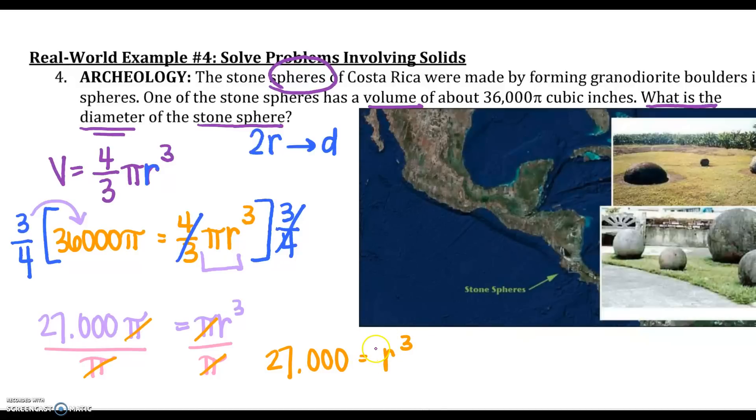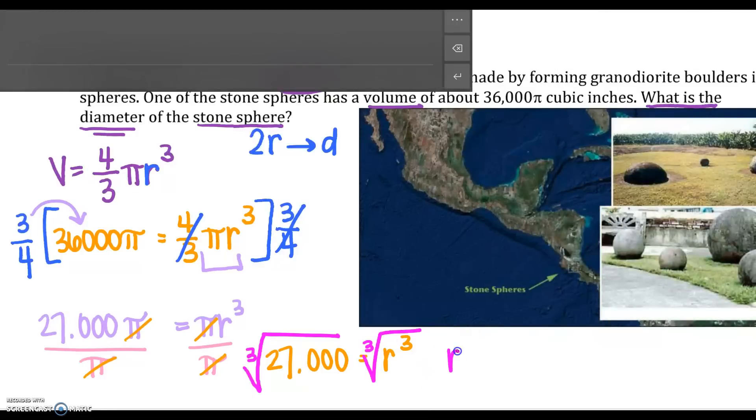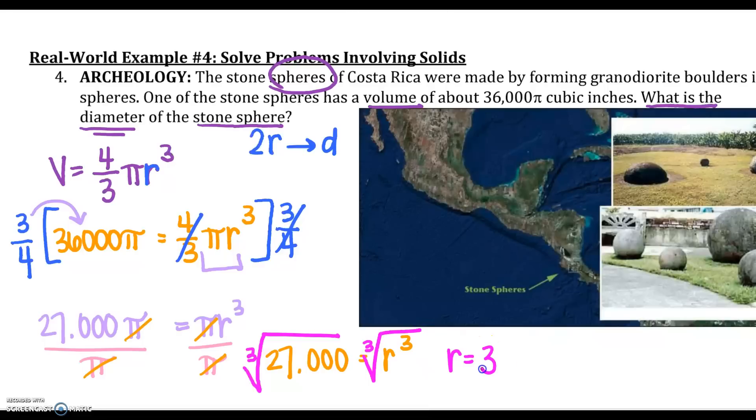Now if this said r², I would take the square root. Since it says cubed, I need to take the cube root. So we need to learn how or remind us how to do that. So I'm going to take my second, I'm sorry, I'm going to take my math, and I'm going to go down to this button right here where it says 3, and then the root button. And then I'm just going to put in whatever number I need and push enter. So my radius becomes 30 inches. And then I know that my diameter would be times 2, so that would be 60 inches.